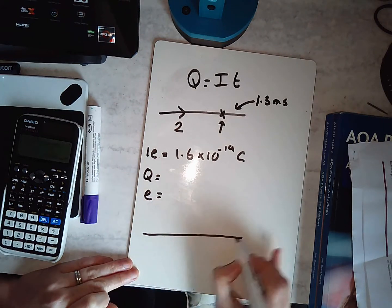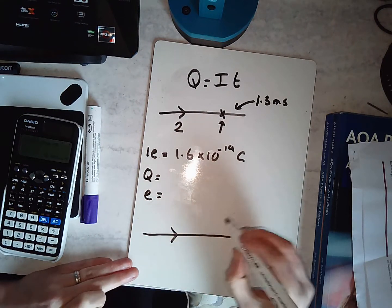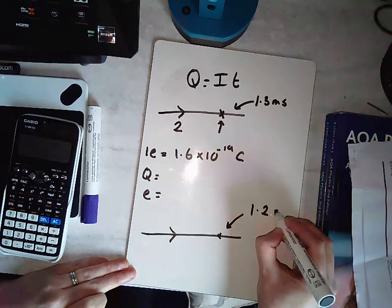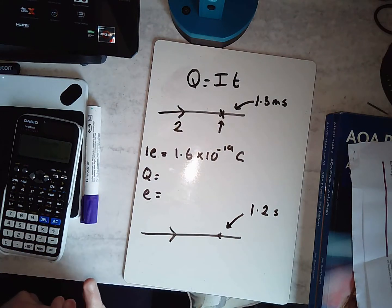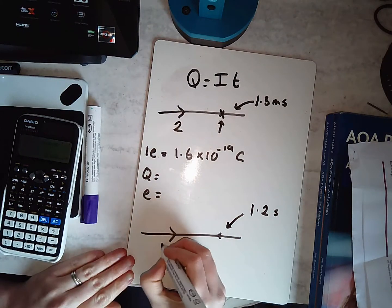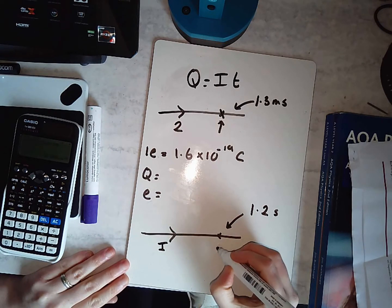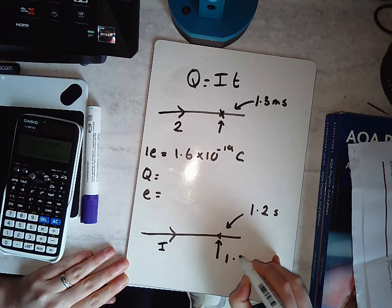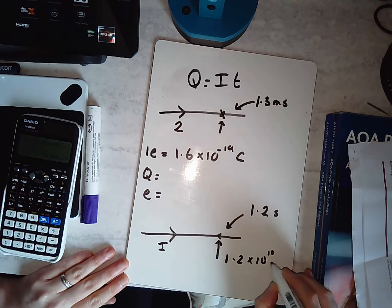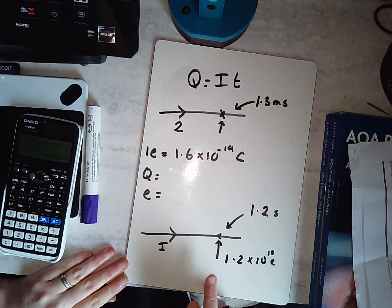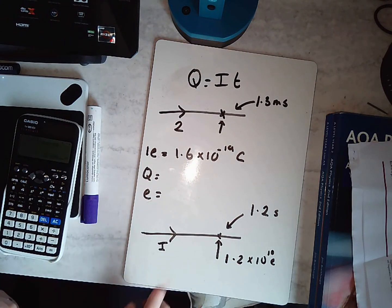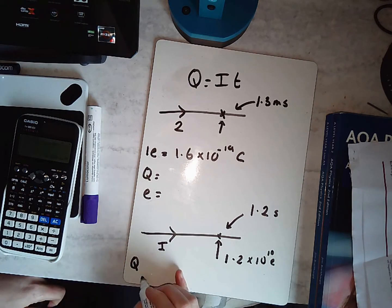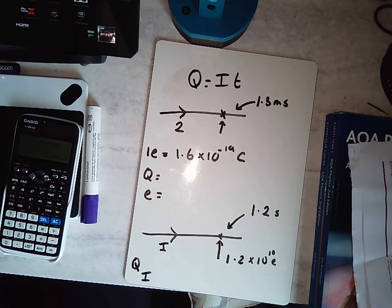For this next situation, we're working a bit backwards. This is 1.2 seconds — not milliseconds, just seconds. I want to know what the current is when 1.2 times 10 to the 10 electrons pass through this point in 1.2 seconds. First, find the total charge, then find the current. Pause the video and have a go.